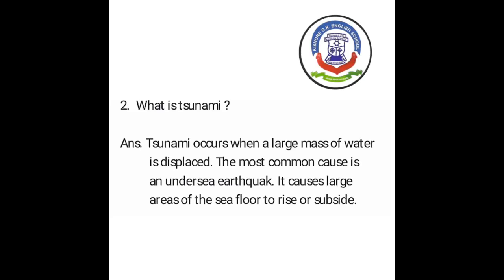Now let us understand question number two: what is a tsunami? (Tsunami kya hai?) The answer is: a tsunami occurs when a large mass of water is displaced. (Tsunami tab hoti hai jab paani ka ek bada dravya maan visthaapit ho jaata hai.) The most common cause is an undersea earthquake. (Sabse aam kaaran ek samudra tale ka bhucamp hai.)